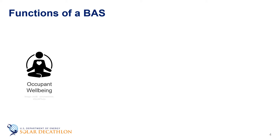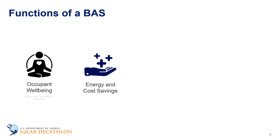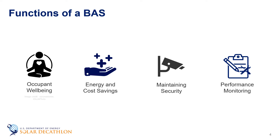A BAS is commonly programmed to manage building operations as energy efficiently and cost-effectively as possible. For example, a BAS could support a weekly schedule which automatically deactivates equipment when a room is not expected to be used, like automatically switching off or dimming lights when a sensor detects no movement inside a room for a specified amount of time. BAS also assist in maintaining building security by providing centralized monitoring and access control features to building operators. Lastly, they monitor device and equipment performance and provide maintenance alarms and reminders to appropriate staff, and also assist in maintenance troubleshooting efforts.